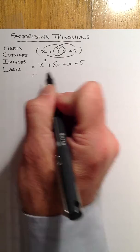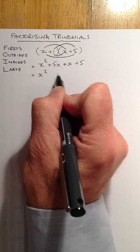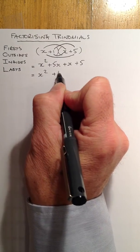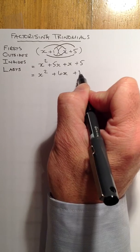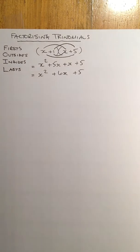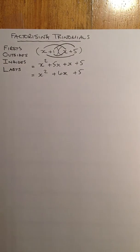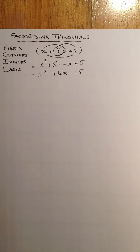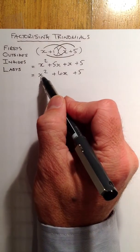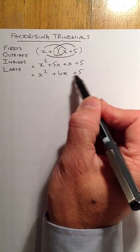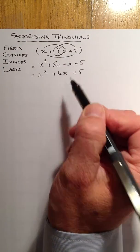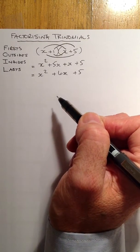I'll then gather up the middle terms, which gives me a plus 6x, and that's going to be plus 5. So that's the bracket multiplied out using FOIL. This is quite important when we're factorising, because factorising is just the reverse of that. What I'd be trying to do is going from the trinomial, like this one here, and putting it back into brackets.